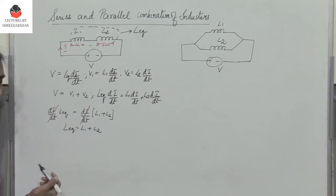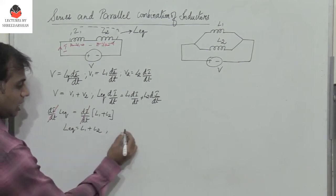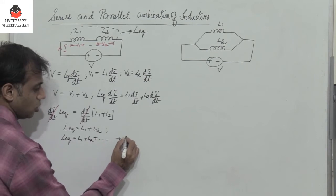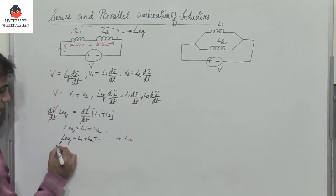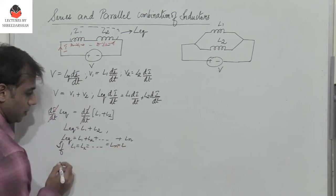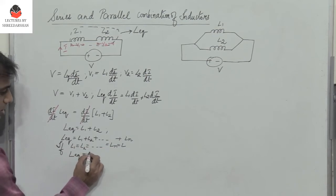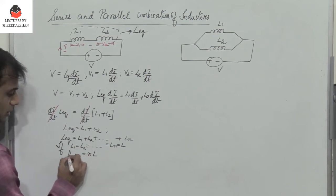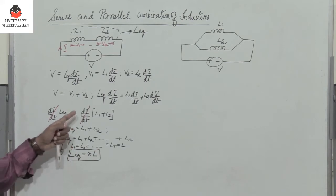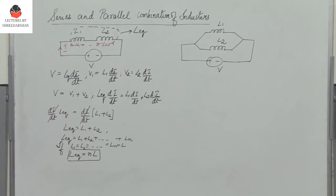If we have N number of inductors, then L equivalent equals L1 plus L2 and so on up to LN. If L1 equals L2 equals LN equal to L, then L equivalent equals N times L. The equivalent inductance is the sum of individual inductances, very similar to the series combination of resistors.